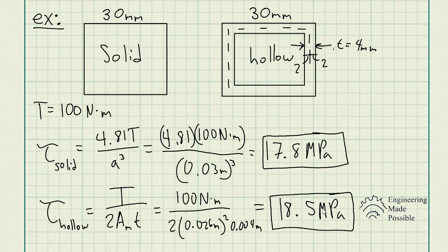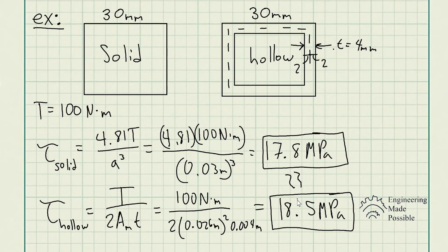Comparing the two: the solid shaft gives 17.8 MPa and the hollow shaft gives 18.5 MPa — they are approximately the same. This tells us that hollow shafts use much less material, but the shear stress developed for any given torque is nearly equal to that of a solid shaft. In other words, hollow shafts are more structurally efficient.